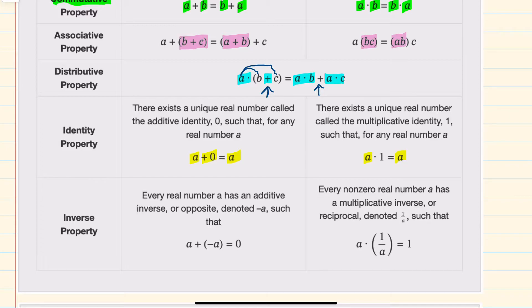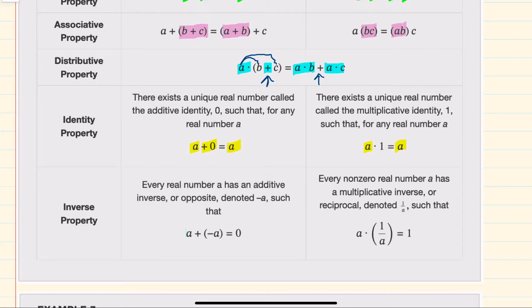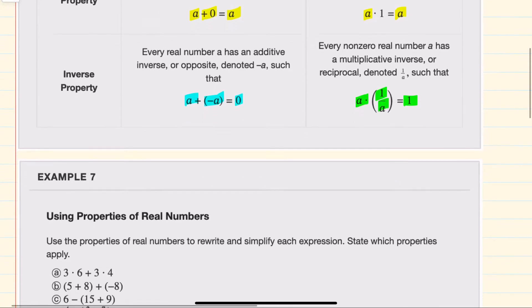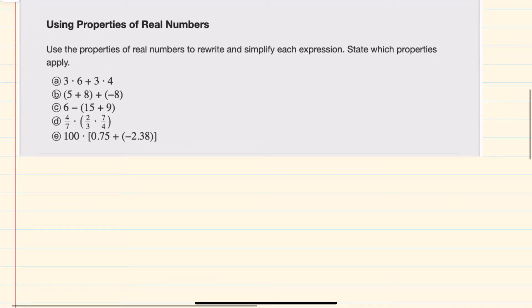Inverse properties are similar, except that I would add a number and its opposite to get zero, and I would multiply a number and its reciprocal to get one. So with these rules in mind, looking at our example here, using properties of real numbers, looking first at a,